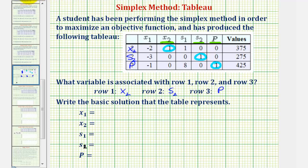So going back to the first row, this tells us that one times x sub two, which is x sub two, equals three hundred seventy-five.